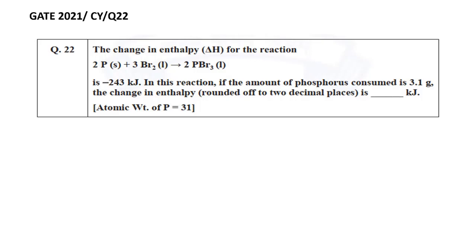Before solving this particular question, first let's write down the information given here. 2 P + 3 Br₂ → 2 PBr₃. Here for this reaction ΔH = -243 kJ. Here the number of moles of phosphorus is 2.